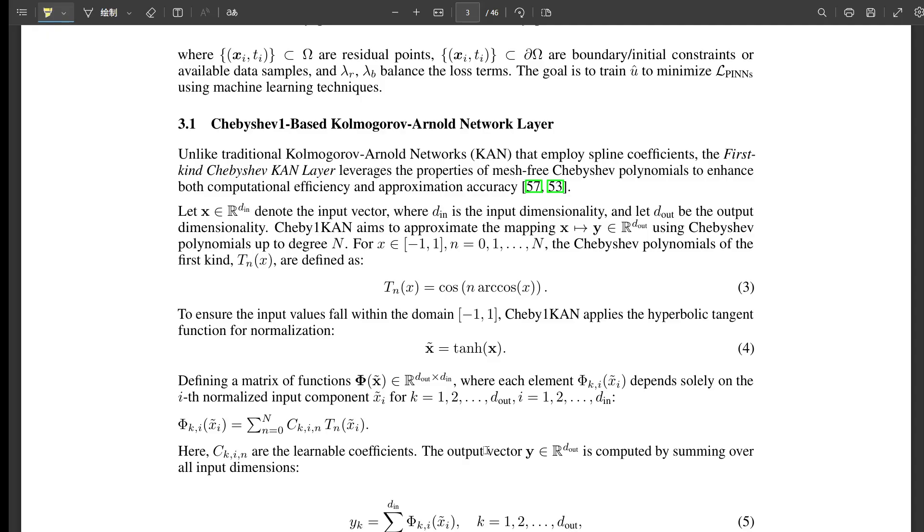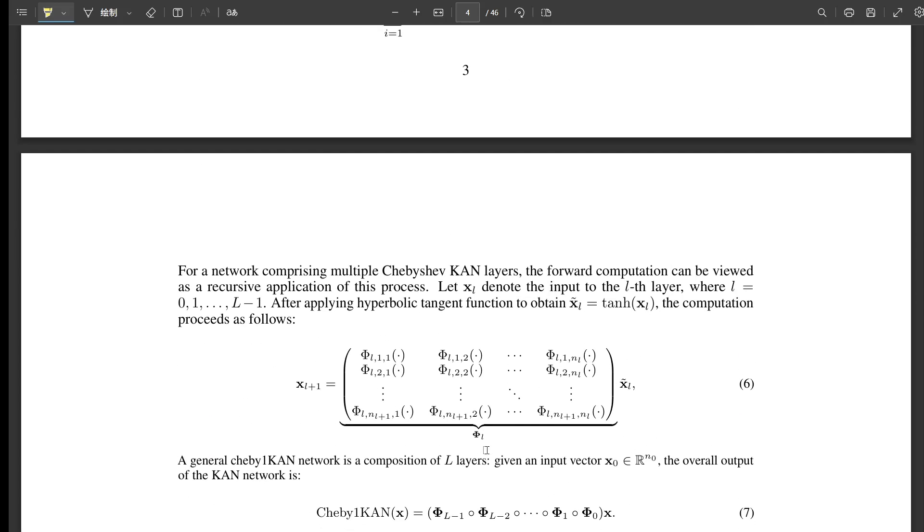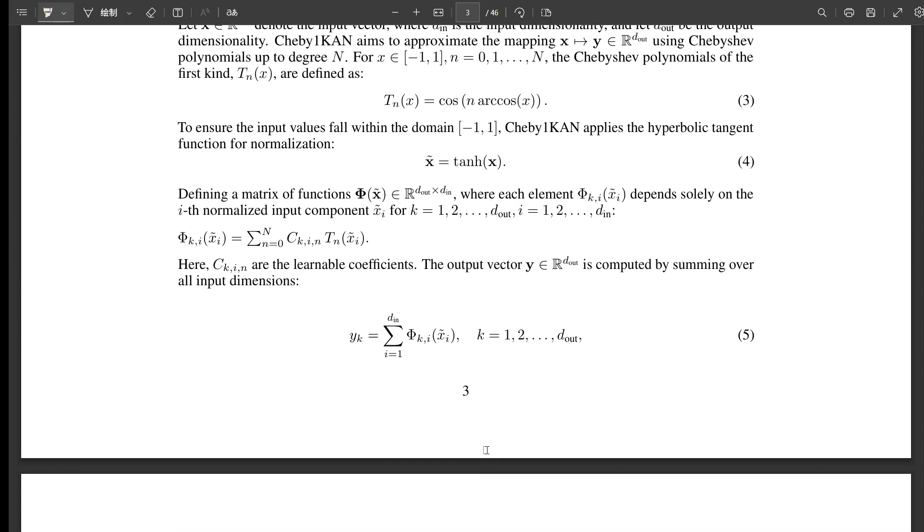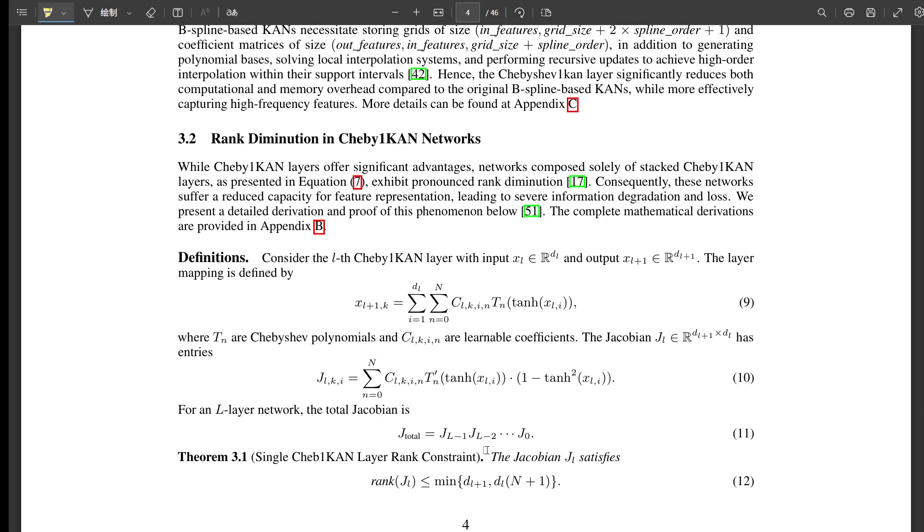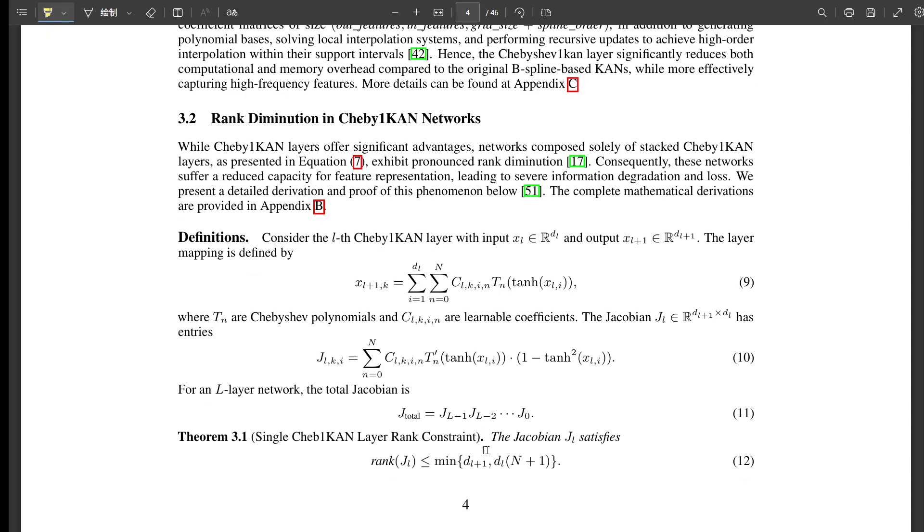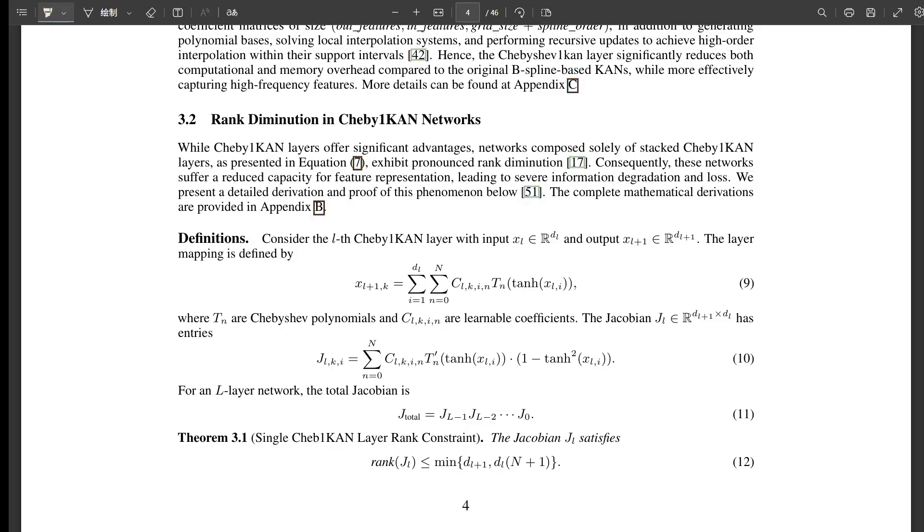First, there's a built-in limit for each single Chebyshev-1-CAN layer. Theorem 3.1 in the paper proves mathematically that the rank of one layer's Jacobian is capped. It's limited by the input and output sizes and also by how many Chebyshev polynomials you use. Number two is the activation function that often use tanh. It's great for non-linearity, but its derivative is always between zero and one. Theorem 3.2 shows this acts like a damper, reducing the strength of the Jacobian - technically, its spectral norm and singular values.